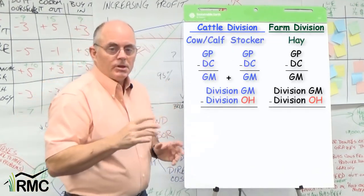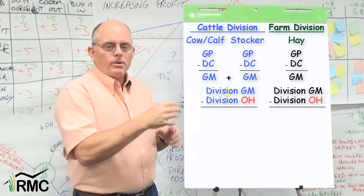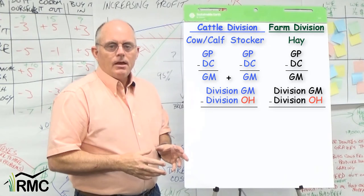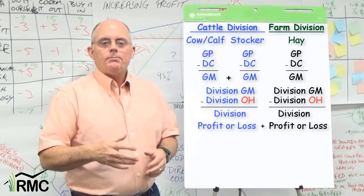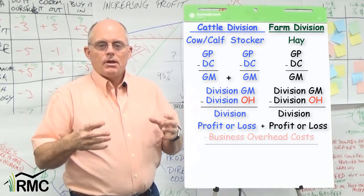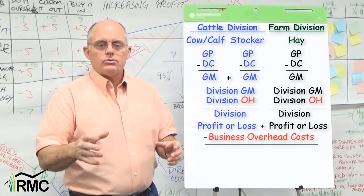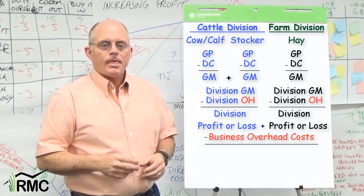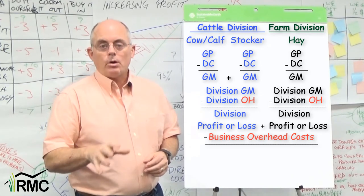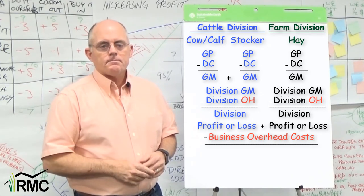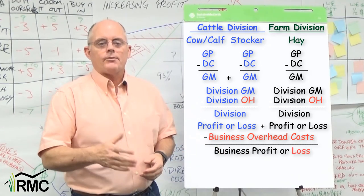Let's pick up things where we left off. Start by subtracting the divisional overheads from the divisional gross margin. That gives us divisional profit or loss. Add up the division profit or loss from each division and then subtract all of the other overhead costs in the business, including those that were shared between divisions. We call those business overheads. Most of the overhead costs in your business will probably be business overheads. So once we subtract the business overheads, we have our projection of business profit or loss.